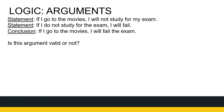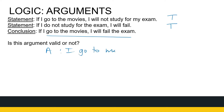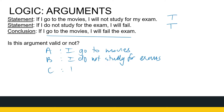An argument is valid if, given two statements that are true, my conclusion is also true — so that's what we need to test. If those two statements are true, will my conclusion be true? Let A be the statement 'I go to the movies', B be the statement 'I do not study for exams', and C be the statement 'I fail my exam.'